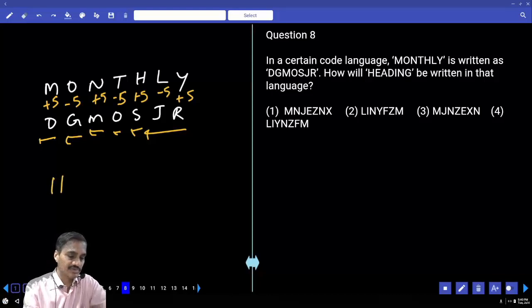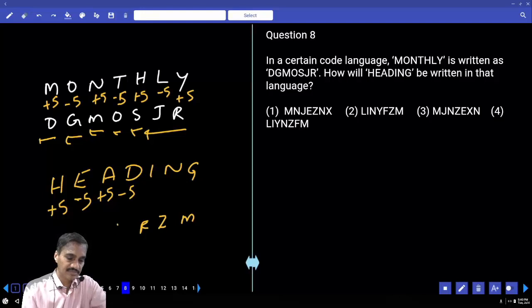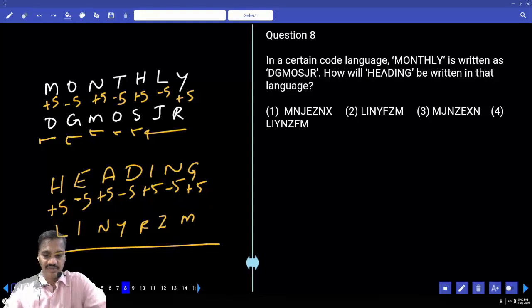In the same way, HEADING: H-E-A-D-I-N-G. H is 8, 8+5 is 13 which is M. E-5 is Z, A+5 is F, D-5 is Y, I+5 is N, N-5 is I, G+5 is L. Written in reverse: LINYFZM - choice two for question number eight.